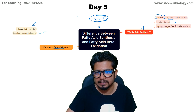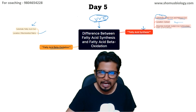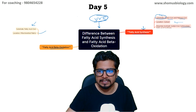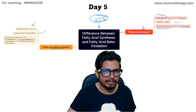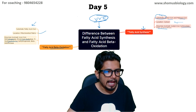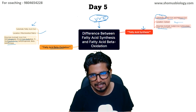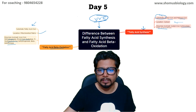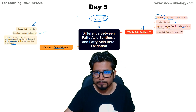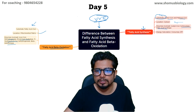The enzymes involved in fatty acid synthesis are acetyl-CoA carboxylase and fatty acid synthase — two important enzymes. In beta oxidation, the four important enzymes are acyl-CoA dehydrogenase, enoyl-CoA hydratase, 3-hydroxyacyl-CoA dehydrogenase, and beta-ketothiolase.